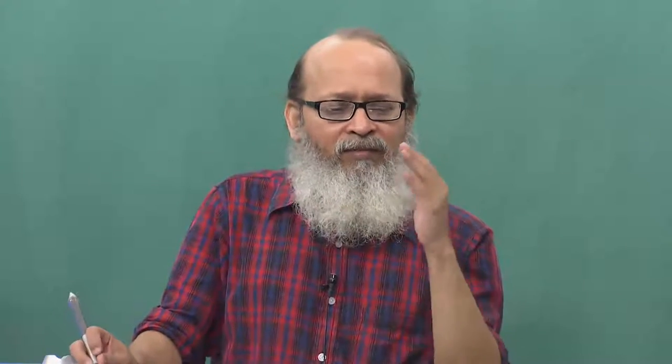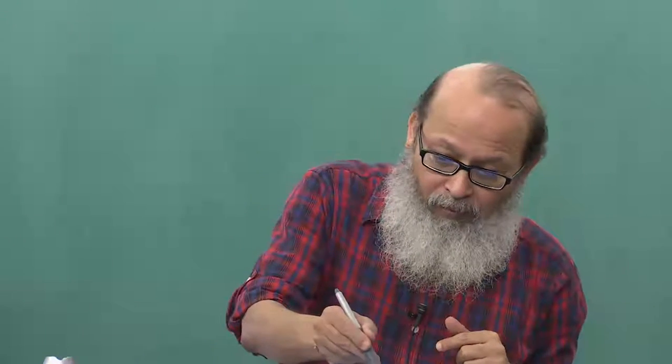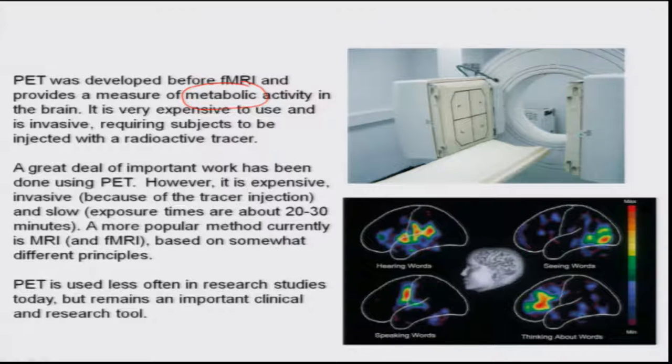The two most popular investigations are positron emission tomography and functional MRI, which provide an indirect measure of metabolic activity. Metabolism, as you understand, is the process of formation, repair, and consumption of energy to run your bodily systems.